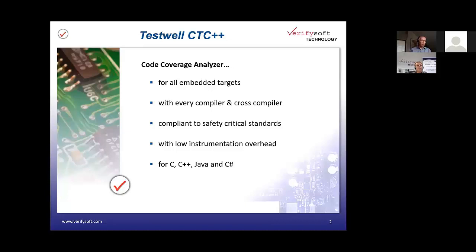The fourth point is that C2C++ works with low instrumentation overhead. As we support execution of instrumented code on a target, we see that there are memory limitations in such devices. We take care not to introduce too much code bloat so it can run on almost every target. We also have different methods for different workflows, so depending on the capabilities and limitations of your target, we can adjust the way we measure code coverage. You do need some extra space for the instrumented code, which is a little more than your original code.